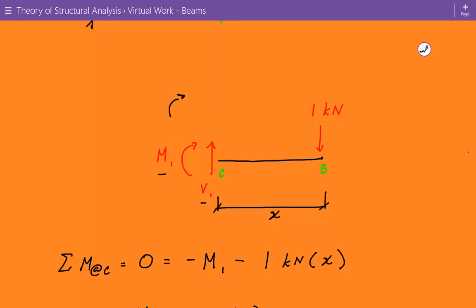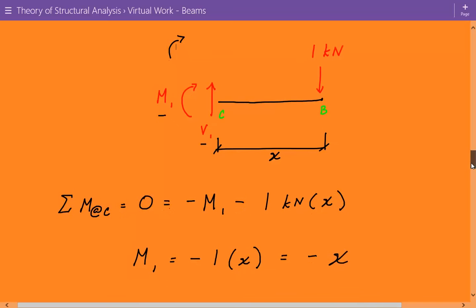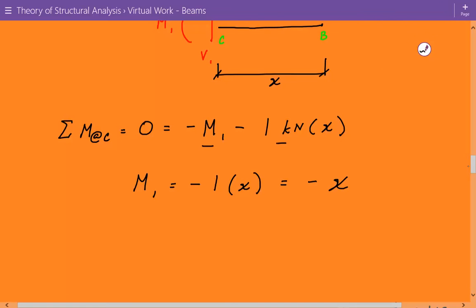And now we're going to take a moment about location C. So again, clockwise is negative and counterclockwise is positive. So we have negative M1, which is our virtual internal bending moment, minus our unit load, 1, times a moment arm of X. So our virtual internal moment function is equal to negative X.